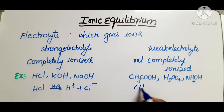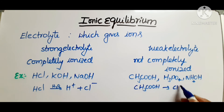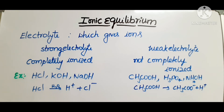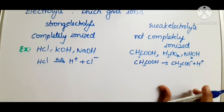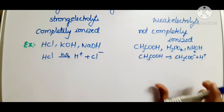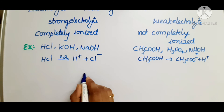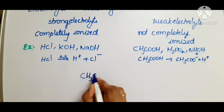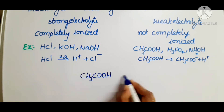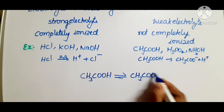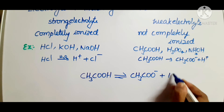For example, if you have taken CH₃COOH, it will ionize into CH₃COO⁻ and H⁺. Only weak electrolytes allow us to study ionic equilibrium — for instance, CH₃COOH dissociating into CH₃COO⁻ and H⁺.